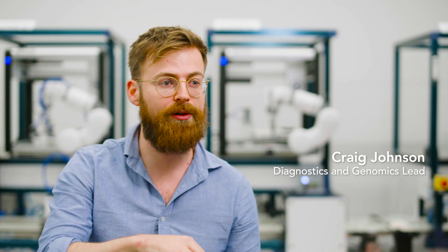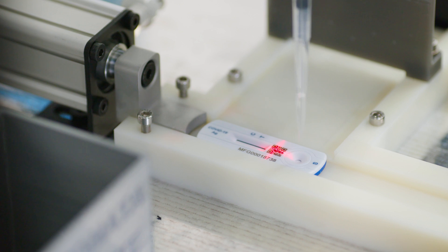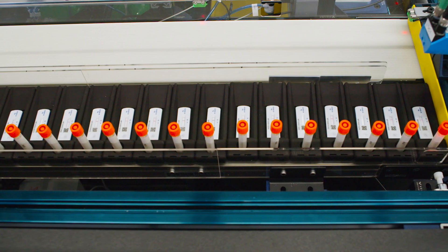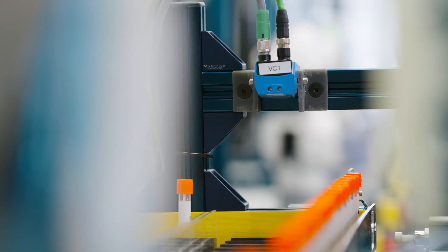We then aliquot out the sample onto the lateral flow cassette and that cassette is then loaded onto a conveyor for the incubation time. A picture is taken and that's sent off so they can understand what their lateral flow result is.